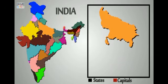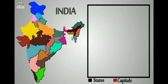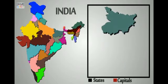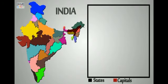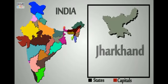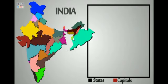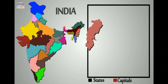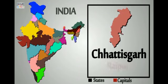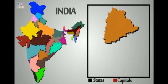Next one is Uttar Pradesh, its capital is Lucknow, and Uttar Pradesh is the largest populated state of our country. Next is Bihar and its capital is Patna. Next one is Jharkhand and its capital is Ranchi. Next one is Odisha and its capital is Bhubaneswar. Next state is Chhattisgarh and its capital is Raipur. Next one is Telangana and